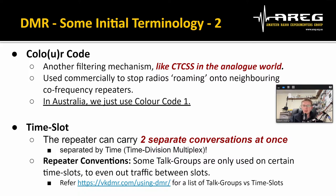There are two time slots, one and two. With DMR repeaters, certain talk groups are only accepted on certain time slots. The point is to even out voice traffic — if a talk group is used very regularly, it might end up on a particular time slot, leaving the other free for less used talk groups so they can both share the repeater simultaneously. There is a lookup table on vkdmr.com providing information on what talk groups are available on what time slots.